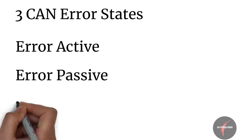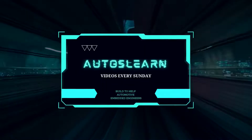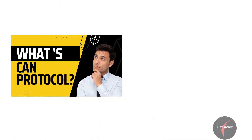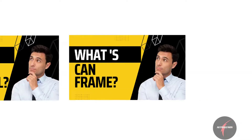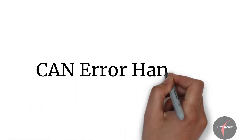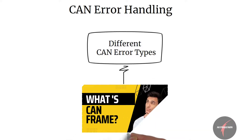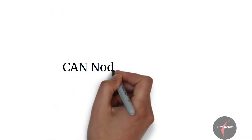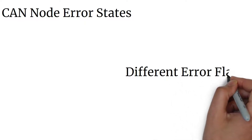There are three CAN error states: error active, error passive, and bus off. We have looked into several important concepts in the last videos, and in this video we will wrap up with the last few important concepts. Let's get back to error handling in a CAN network. In this video, let's look into CAN node error states and what are the different error flags that a CAN ECU, also called a CAN node, can raise in the network.